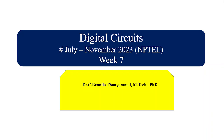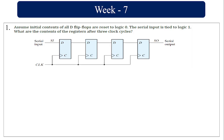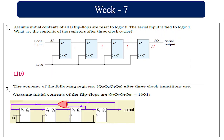Hi, today we are going to see Digital Circuits Week 7. Assume the circuit here — the serial input is tied to logic 1. So in the first clock cycle it becomes 1, in the second cycle it comes to 1, and in the third cycle the 0 comes here, so in the third cycle it's 1 1 1 0.